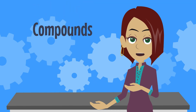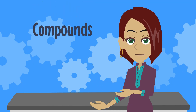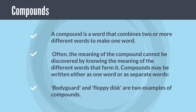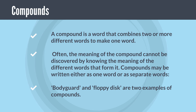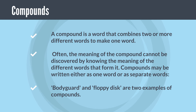Welcome back. Today we are going to discuss compounds. A compound is a word that combines two or more different words to make one word. Often the meaning of the compound cannot be discovered by knowing the meaning of the different words that form it. Compounds may be written either as one word or as separate words. Bodyguard and floppy disk are two examples of compounds.